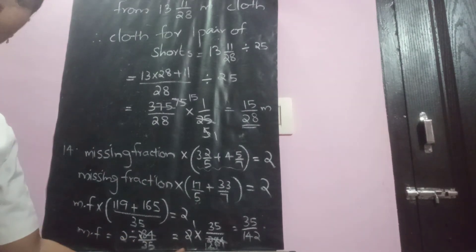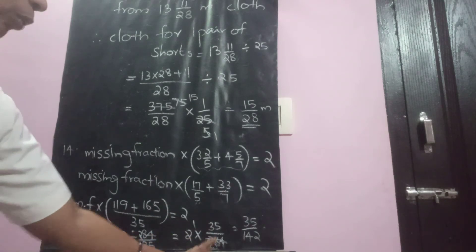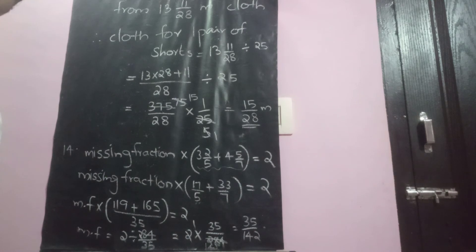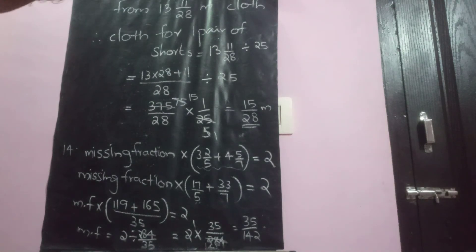Only one number 2 and this one gets cancelled. So 35 by 142 is the missing fraction in our hand.